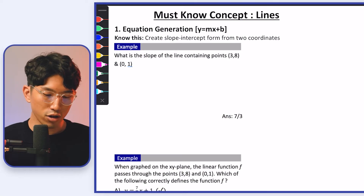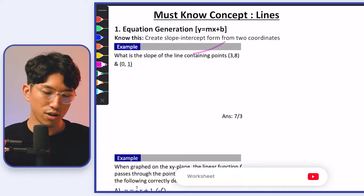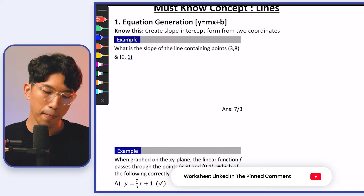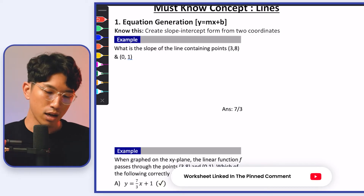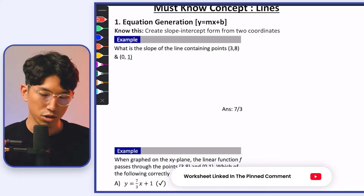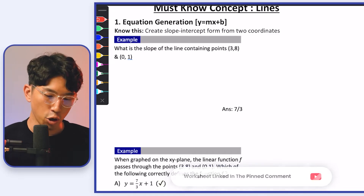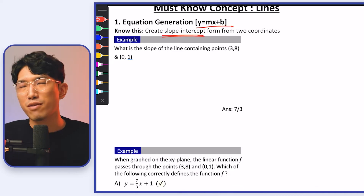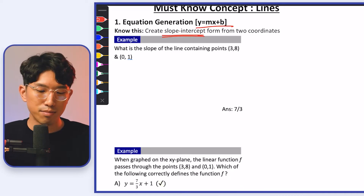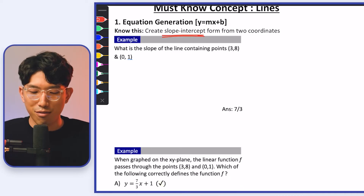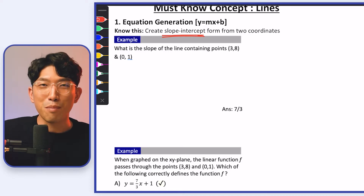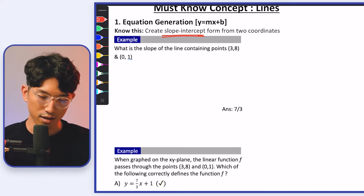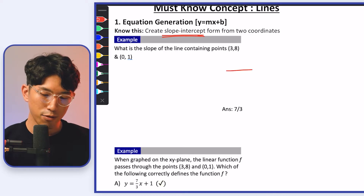Let's start with the first concept — you should have known this before you were even born, but we're just going to quickly go over it. The most basic thing about lines is going to be the bone structure, known as the slope-intercept form: y = mx + b. We've probably heard of it 100,000 times but just never understood it. So here is a 10-second cliff note.